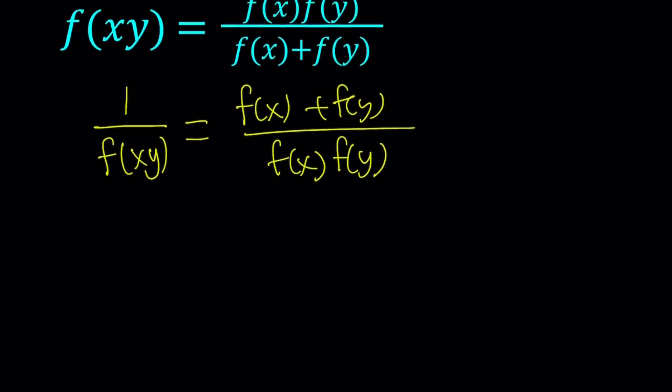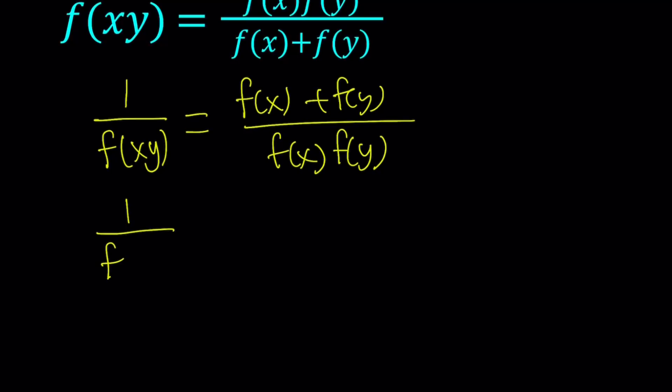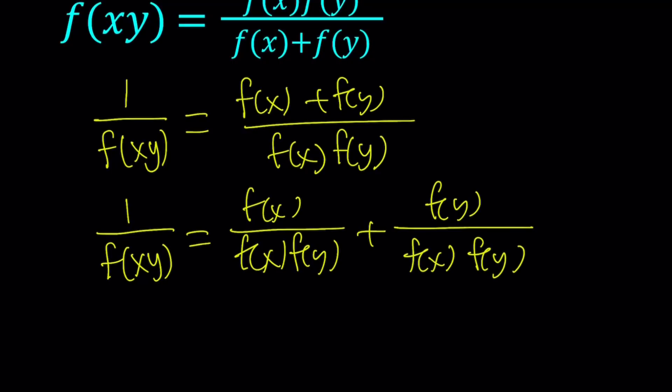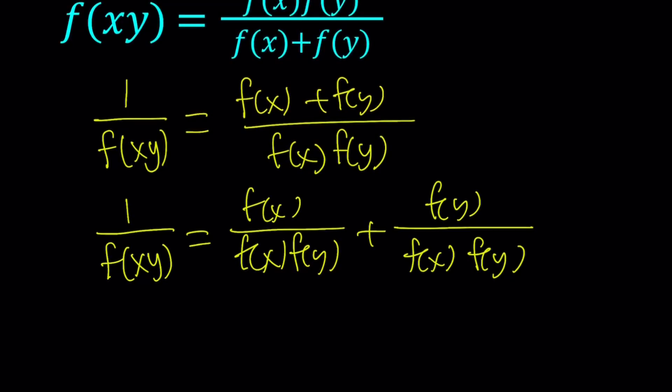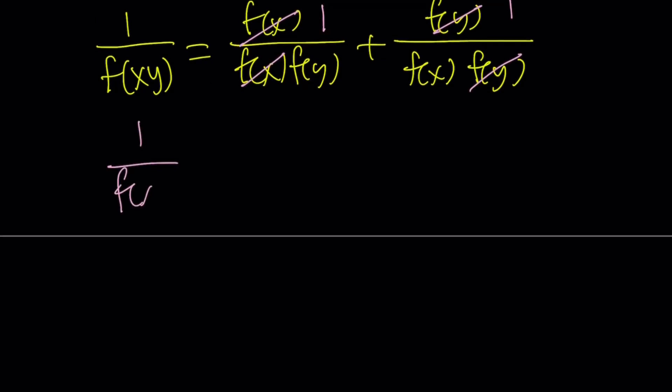Now I said that we're going to separate the stuff on the right-hand side, so I can just write this as f of x over f of x f of y plus f of y over f of x f of y, kind of like un-adding two fractions. You know how we add fractions with the same denominator. We can also un-add those fractions. Next step would be to simplify this. Under certain conditions, like f of x should not be zero, so on and so forth, we can cancel these out, and we end up with something nice. Well, not yet, but it's going to get better. So allow me to write 1 over f of x plus 1 over f of y.